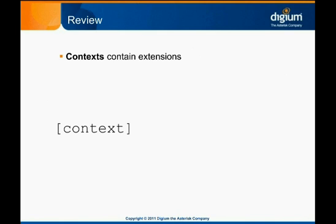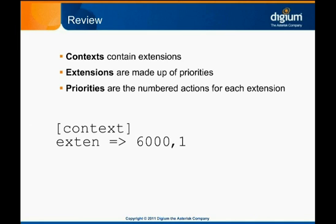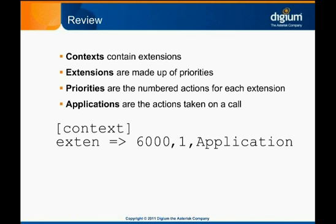To recap, the Asterisk dial plan is written in a sort of scripting language that allows it to be far more expressive and capable than many other PBX dial plans. At its most basic, it really isn't too complicated. The dial plan consists of several contexts, and each context has extensions in it. Each extension has one or more priorities, and each priority calls an Asterisk application. Next, we'll move on to the context module, where we'll take a closer look at just what you can do with Asterisk contexts.